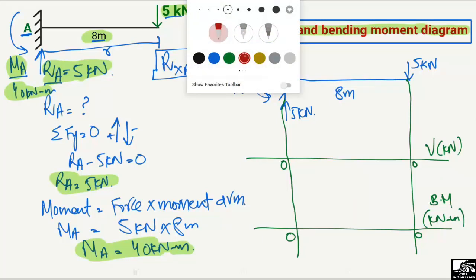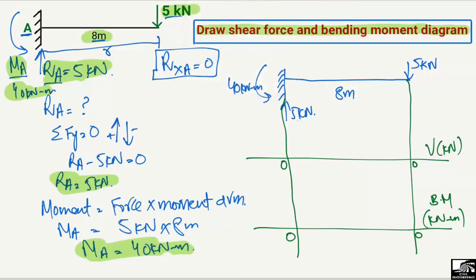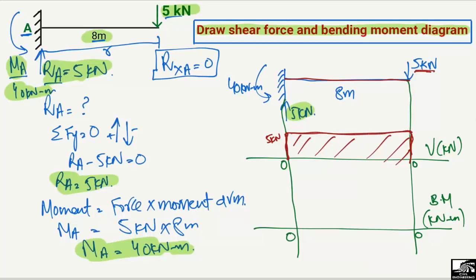To draw the shear force diagram: there is a 5 kN load acting upward at the support, so we move up 5 kilonewtons from the reference line. There is no load along the beam, so it remains a straight horizontal line. Then at the free end there is a downward load of 5 kilonewtons, bringing the diagram back to zero. This closes the shear force rectangle with a magnitude of 5 kilonewtons.